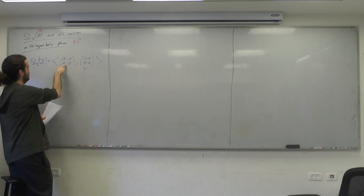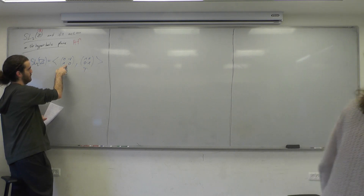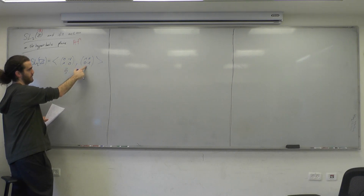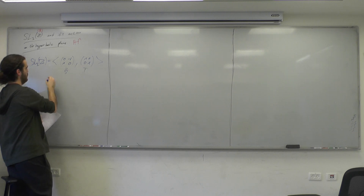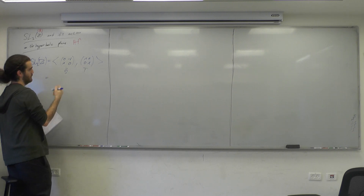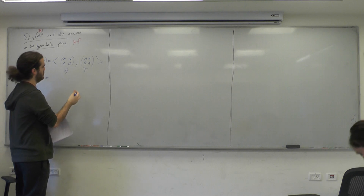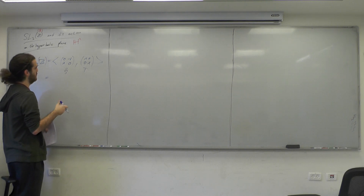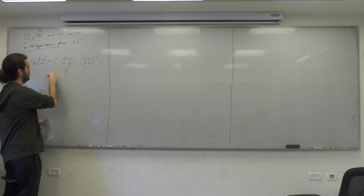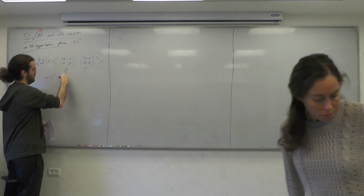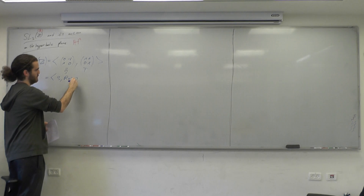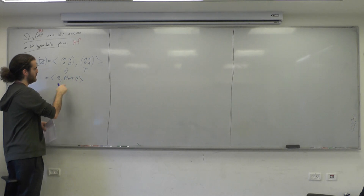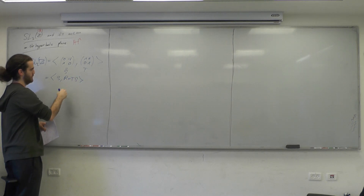S is of order 4, T is of infinite order, but we also mentioned that we would prefer other generators which we will understand later. We have Y = S, and R = T times S, and R was of order 6.